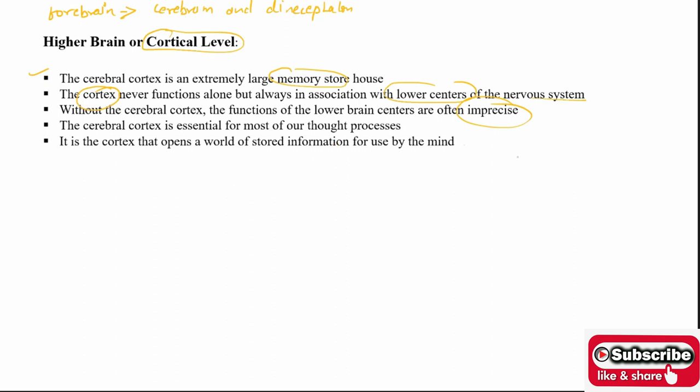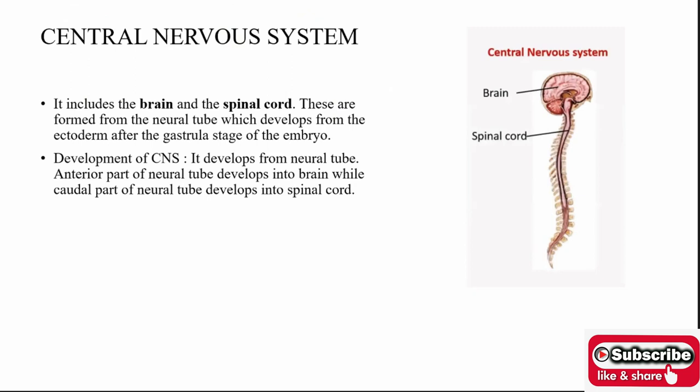The cerebral cortex is essential for most thought processes — memory, reasoning power — all occur in the higher brain. The cortex opens a world of stored information for use by the mind. The CNS includes brain and spinal cord; both are coordinating bodies, ectodermal in origin. Now we will study the CNS in detail — its structure, what regions are present, and how each function is performed.